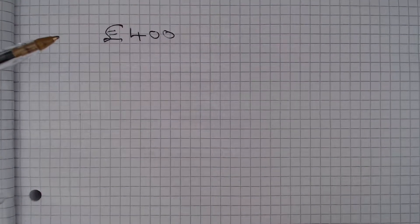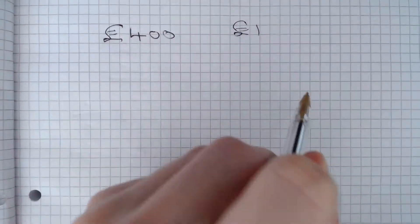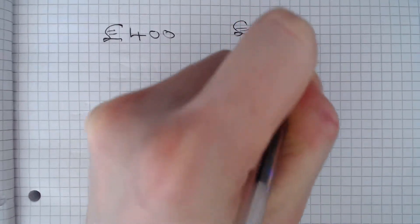So we have £400 and we want to convert this into dollars using the exchange rate that £1 is equivalent to $1.25.